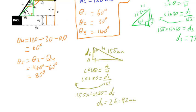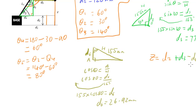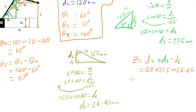Now we've got everything we need to find z. We've got d3, we've got d6 that we're losing, and we've also got d2. So z = d2 + d3 − d6. We gained height, gained height, lost a little bit. Putting the information in: d2 was 120 mm, plus d3 of 77.5 mm, minus d6 of 26.92 mm, giving us a vertical height of 154.42 mm.